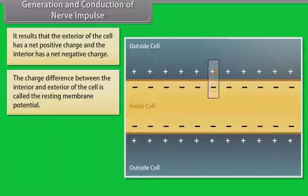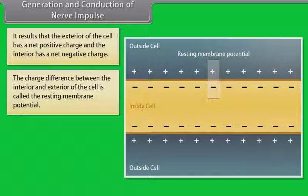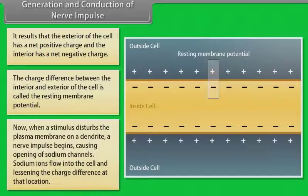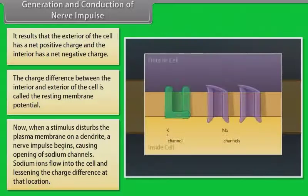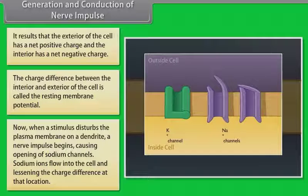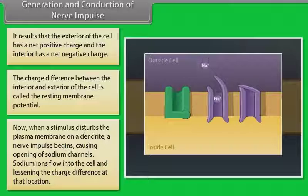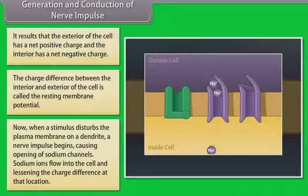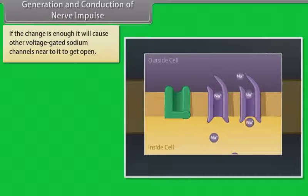The charge difference between the interior and exterior of the cell is called the resting membrane potential. When a stimulus disturbs the plasma membrane on a dendrite, a nerve impulse begins, causing opening of sodium channels. Sodium ions flow into the cell and lessen the charge difference at that location. If the charge is enough, it will cause other voltage-gated sodium channels near it to open.